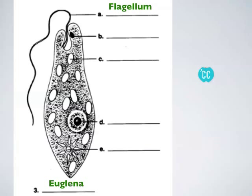Euglena also have an organelle called an eye spot. They can't see, but it's sensitive to light. Its purpose is to allow the euglena to swim towards light so it can carry out photosynthesis. It can move toward more intense light — for example, away from the shade of leaves toward areas with more direct sunlight.